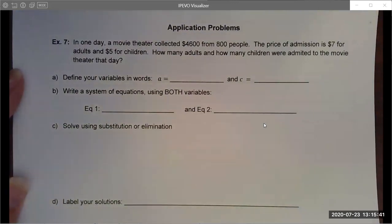In one day, a movie theater collected $4600 from 800 people. The price of admission is $7 for adults and $5 for children. How many adults and how many children were admitted to the movie theater that day?